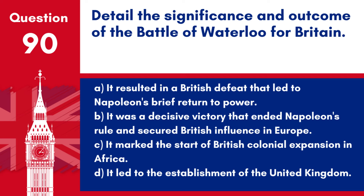Question 89 & 90. What was the primary cause of the Peasants' Revolt in 1381? a. The imposition of the poll tax. b. The spread of the Black Death. c. The loss of English territories in France. d. A royal decree banning traditional village festivals. Answer: a. The Peasants' Revolt in 1381 was primarily incited by the imposition of a poll tax, which was seen as an unfair burden on the poorer segments of society, leading to widespread unrest. Question 90: The Battle of Waterloo in 1815 was a decisive victory that ended Napoleon's rule and secured British influence in Europe.